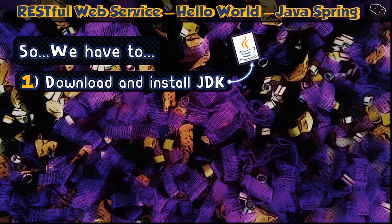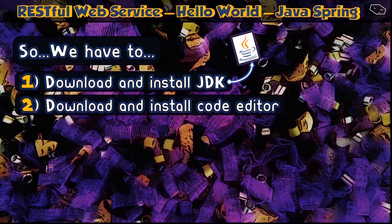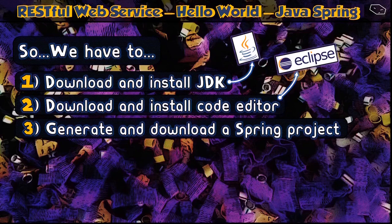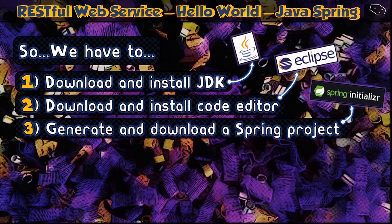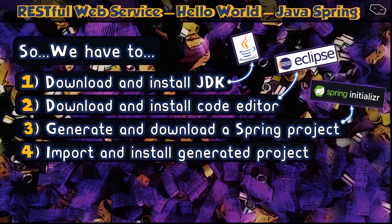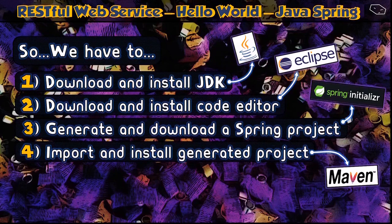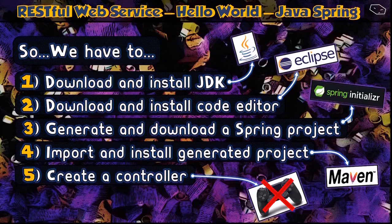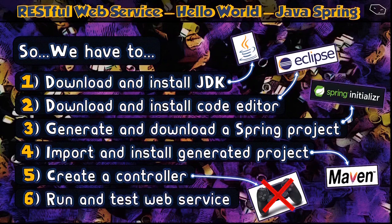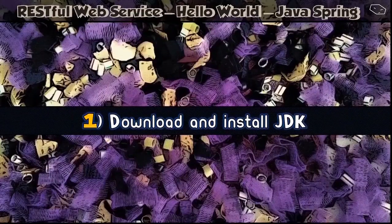So we have six steps: one, download and install JDK (Java Development Kit); two, download and install a code editor — we will use Eclipse; three, generate and download a Spring project using Spring Initializr; four, import into Eclipse and install the generated Maven project; five, create a Spring controller; and six, run and test our web service. Let's do step one.